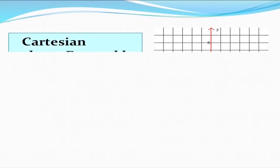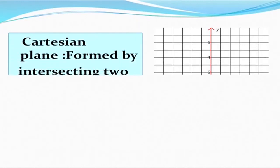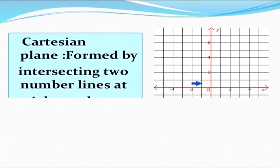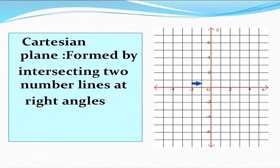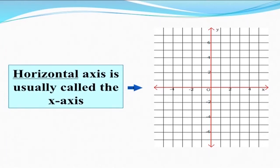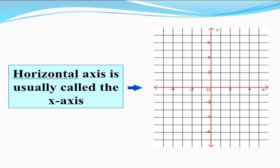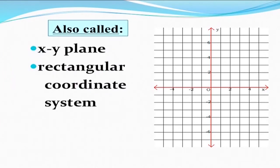For coordinate geometry, we need to understand what we mean by a Cartesian plane. A Cartesian plane is formed by the intersection of two number lines at right angles, or two perpendicular lines. One is horizontal, another is vertical. The horizontal axis is usually called the x-axis and the vertical axis is usually called the y-axis. It is also called an x-y plane or a rectangular coordinate system.